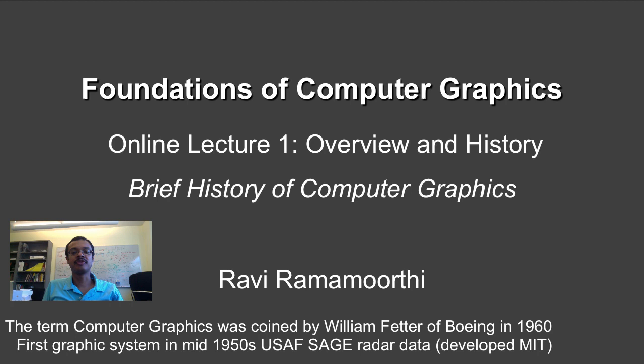In this segment, we are going to give a brief history of computer graphics as part of our initial lecture on an overview and history. The term computer graphics itself was coined by William Fetter of Boeing in 1960. The first graphics systems were developed in the mid-1950s — the US Air Force SAGE radar systems — and they were based on the development at MIT.